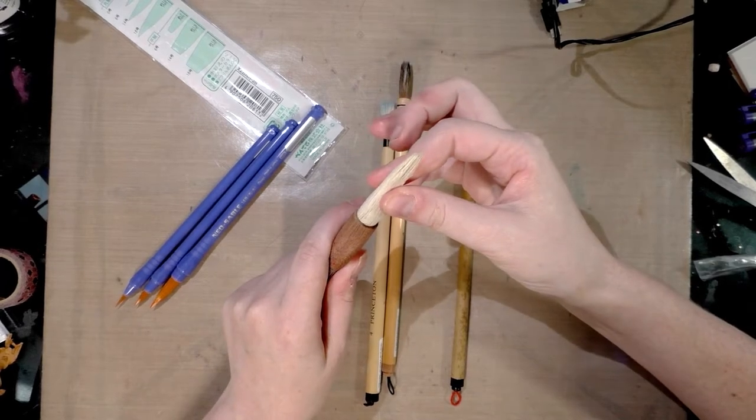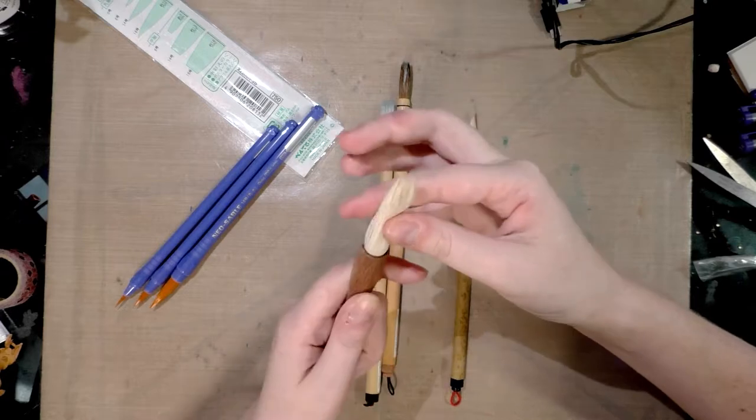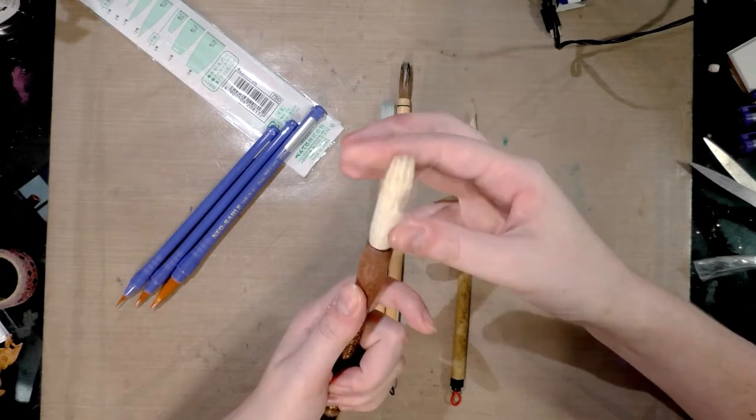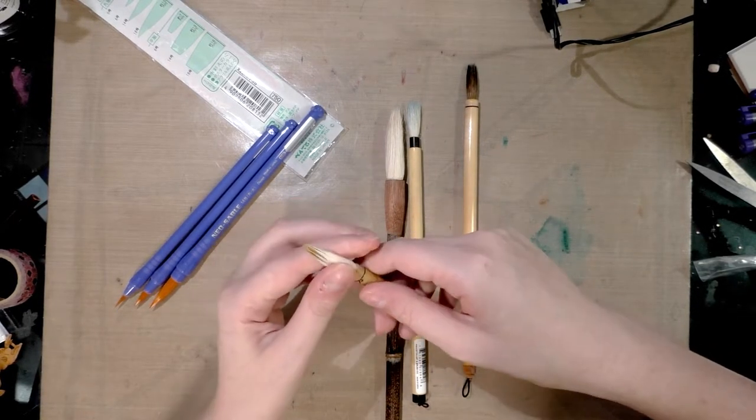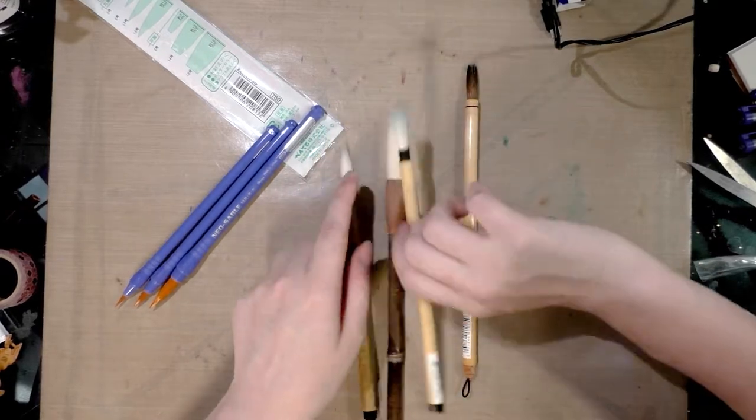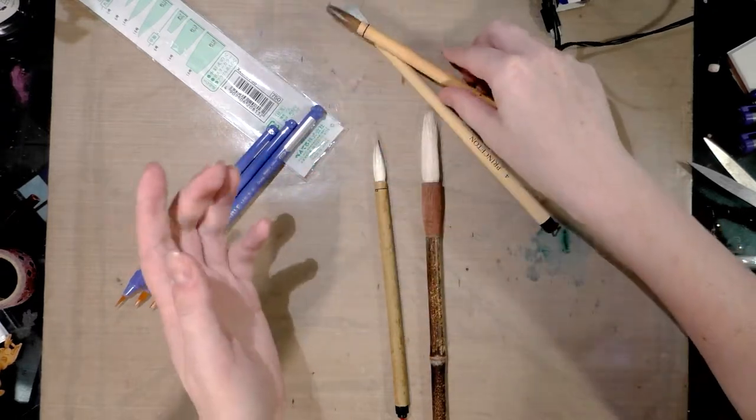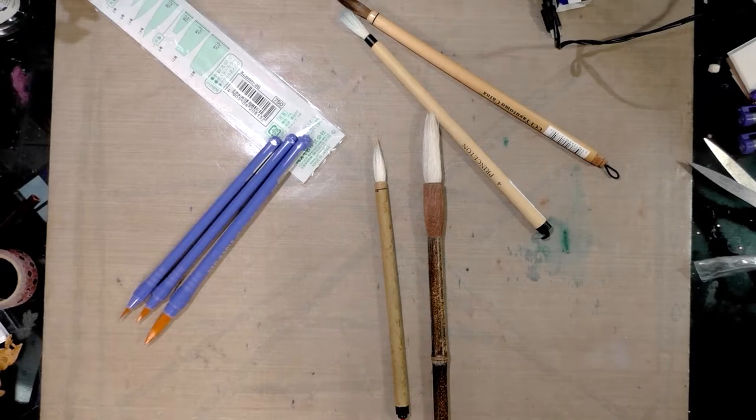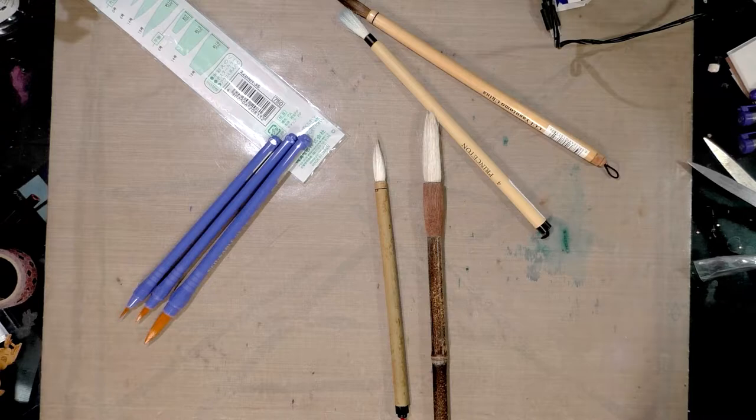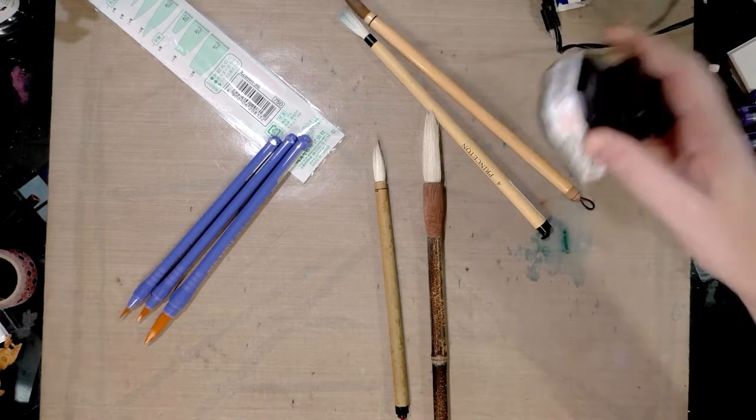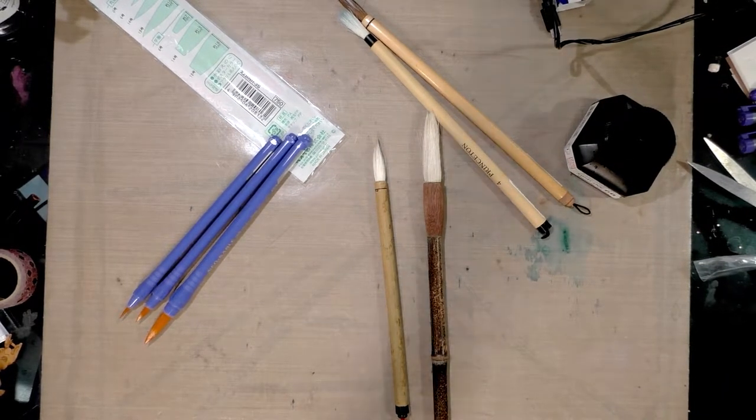So usually when I'm using watercolor brushes, I will clean out the sizing in a cup of water first. So I think I will actually do that. Now these have been used before. These have been used, I believe for watercolor. And I should grab some sumi ink. So this is Kuretake Sumi Ink 60. And I'm going to grab some paper and I'll be right back.